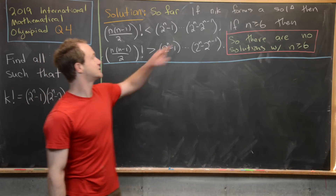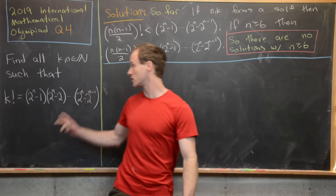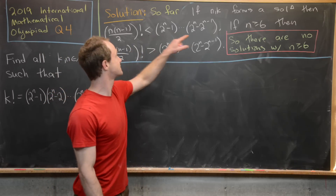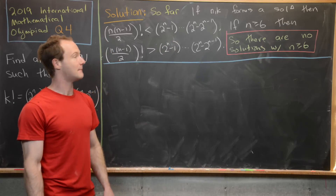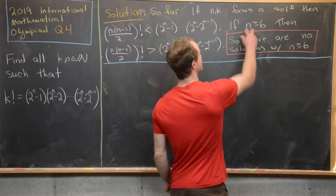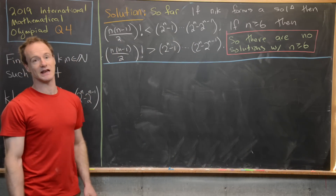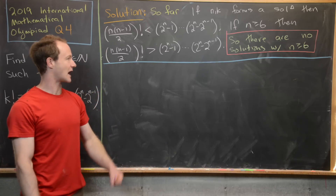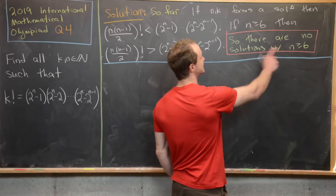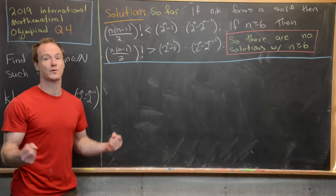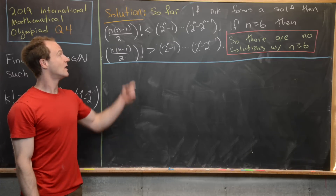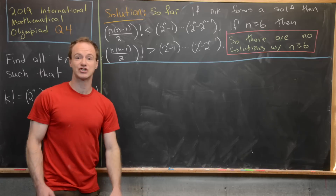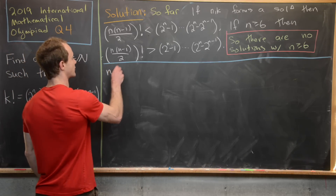We've worked hard to argue the following: if n and k form a solution to this equation, then n times n minus one over two factorial must be less than the product two to the n minus one all the way down to two to the n minus two to the n minus one. Furthermore, we just proved that if n is bigger than or equal to six, the opposite inequality is satisfied. So there are no solutions with n bigger than or equal to six, since both contradictory inequalities would have to hold simultaneously. Now all we have to do is check n equals one, two, three, four, and five by hand.